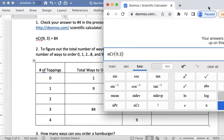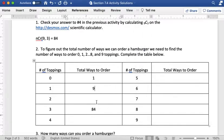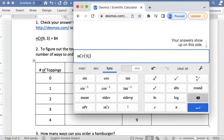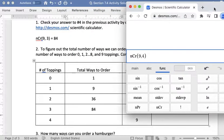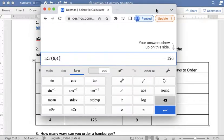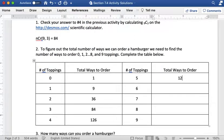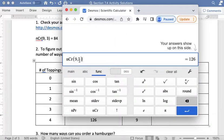For two toppings, I'm going to change this to 2, my r to 2, and I get 36. So 36 ways for me to choose 2 out of those 9 toppings for my hamburger. Next we'll do choosing 4 toppings and we get 126. And choosing 5 toppings, we also get 126. So how many ways are there to make a burger with 6 toppings? 84 ways.